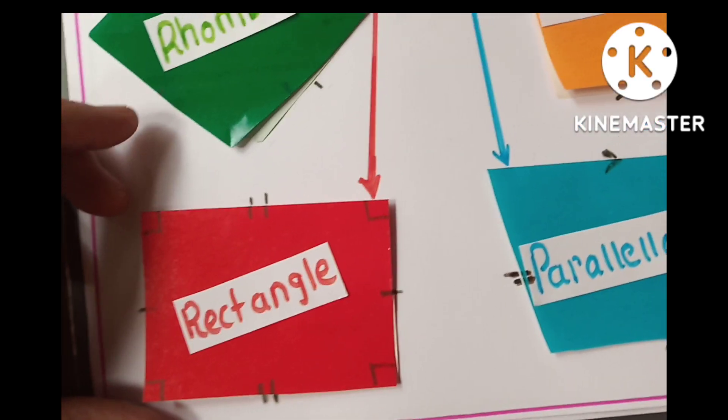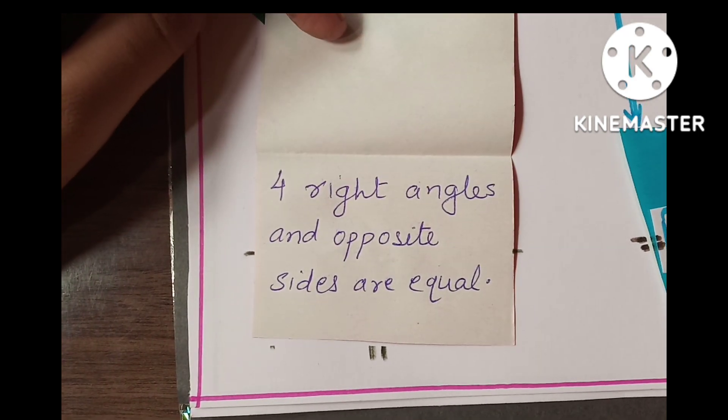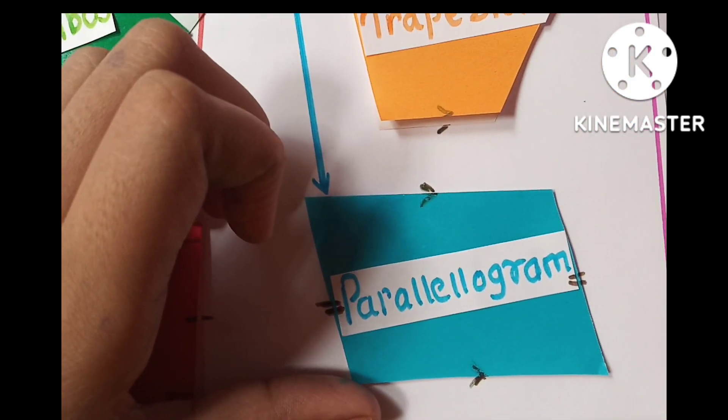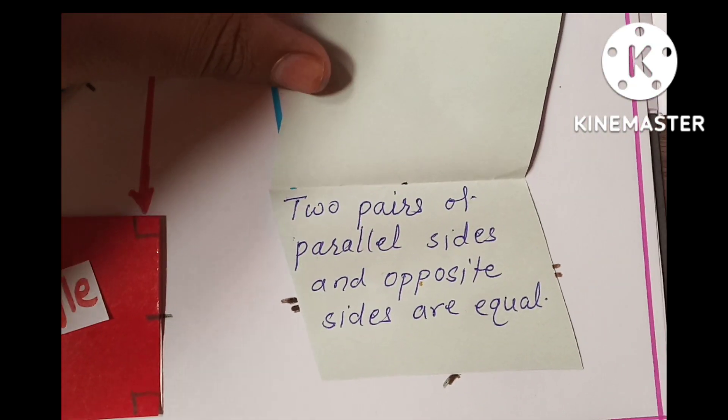Fifth is rectangle. Here is its property and last one is parallelogram. Here is its property.